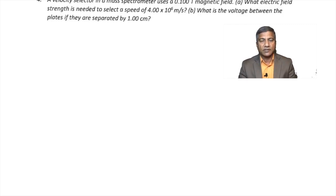Question 4: A velocity selector in a mass spectrometer uses a 0.100 Tesla magnetic field. What electric field strength is needed to select a speed of 4.00 × 10⁶ m/s? And what is the voltage between the plates if they are separated by 1.00 centimeter? A velocity selector uses perpendicular electric and magnetic fields.